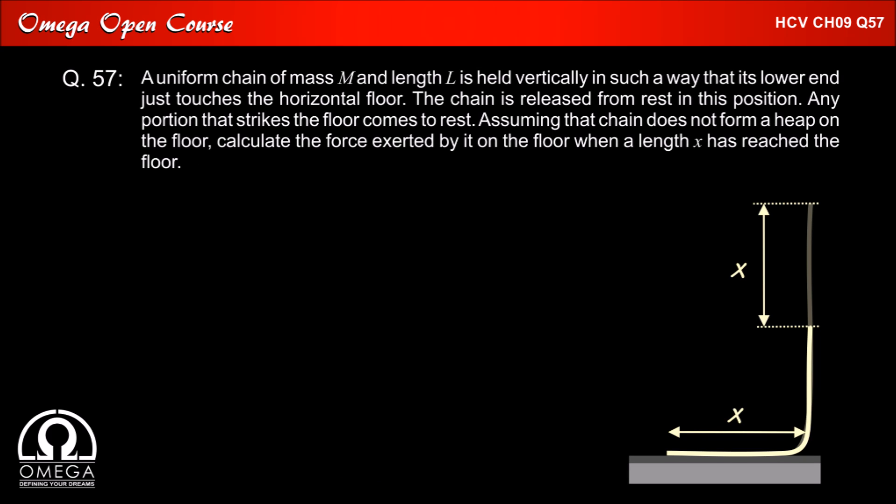Since the portion of the chain that strikes the floor comes to a halt, the floor must apply a force on it to change its momentum. Also, the floor must support the weight of the portion of the chain that lies on it. So the net force applied by the floor on the chain, F_net, is the weight of the portion of the chain on the floor plus the rate of change of momentum of the portion that is striking the floor.